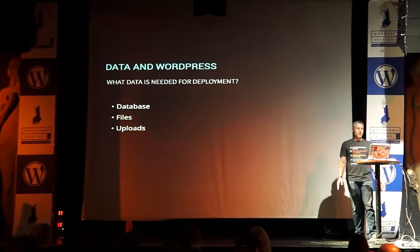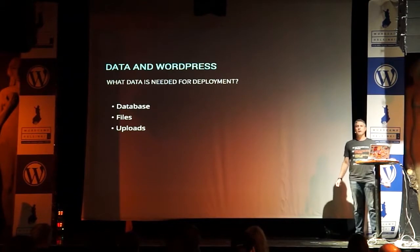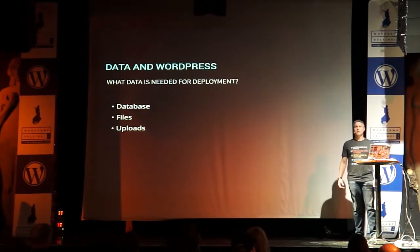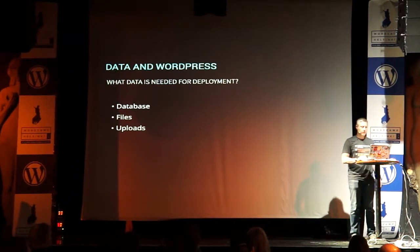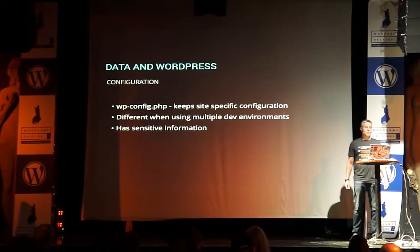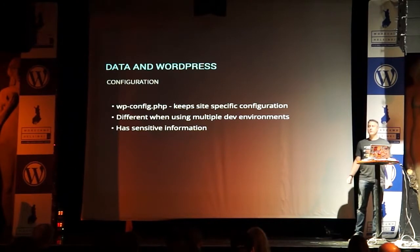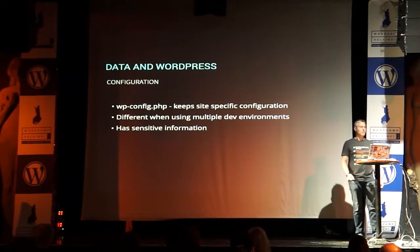If I wanted to deploy a WordPress site, all I need to do is take the database, the files, and the uploads and move them to another system. That gets me my site on another environment. Let's say I copied my site from production down to development to do some testing and coding — that's all I'd need. But that's not going to give you a working WordPress install. You're going to need to create another WordPress config file, which will contain your settings for the database and potentially different settings for development, like debug variables.